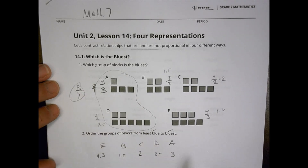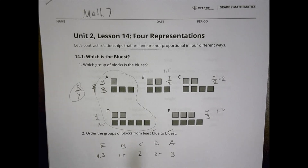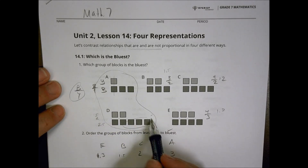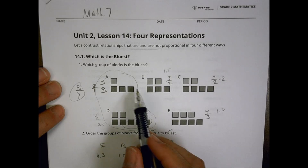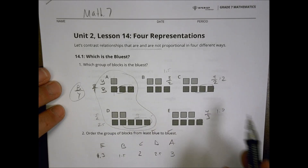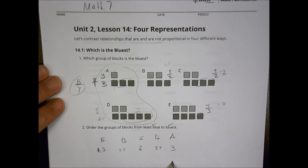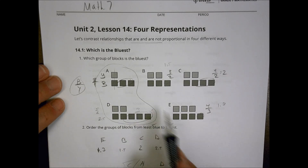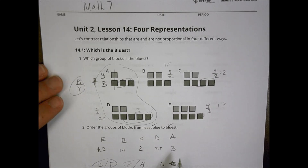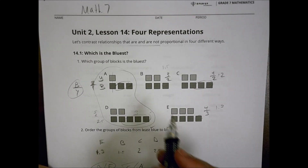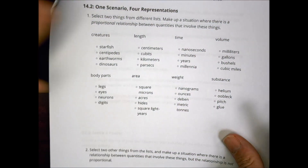If you used a different approach — like yellow to blue, or counting leftovers — you might have ordered them differently, maybe going D first, then choosing between A and C, then between E and B. Either way, it's about making a decision, rationalizing it, and talking it through.